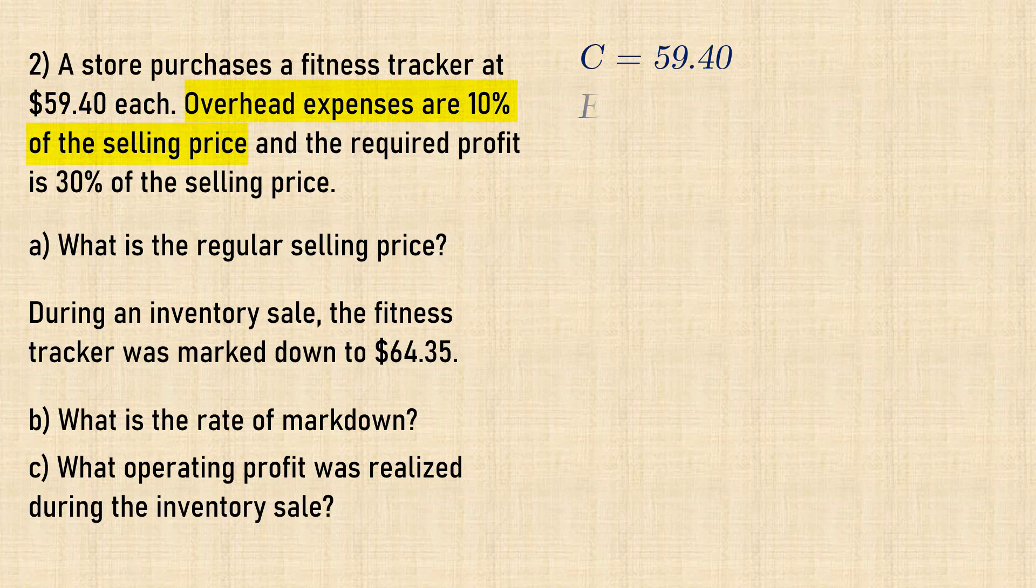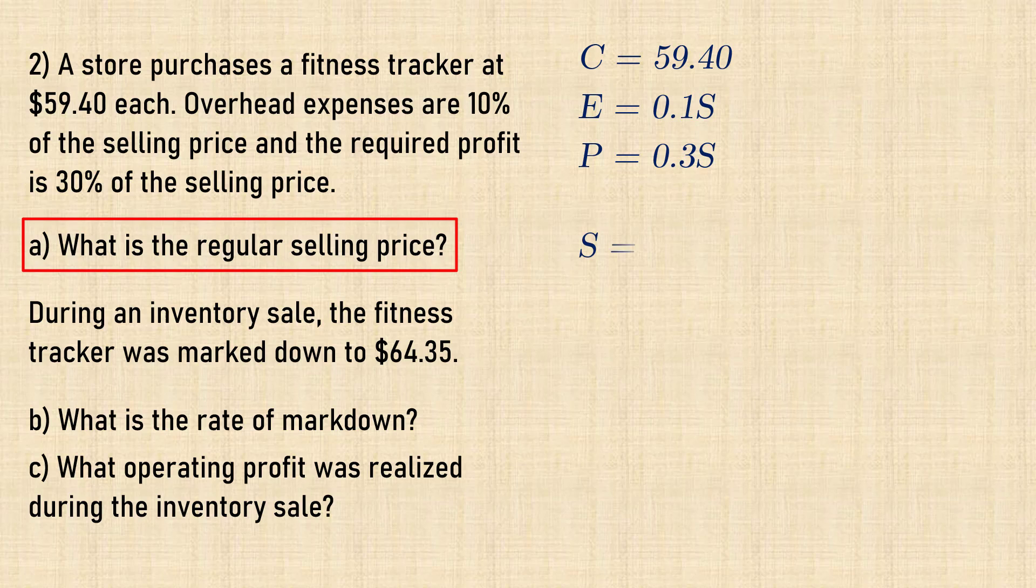Number 2: A store purchases a fitness tracker at $59.40. Overhead expenses are 10% of selling price and the required profit is 30% of selling price.